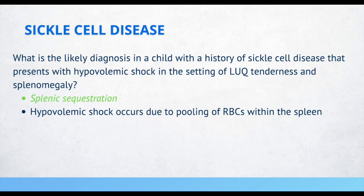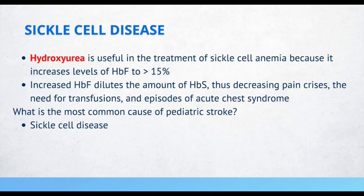What is the likely diagnosis in a child with sickle cell disease that presents with hypovolemic shock in the setting of left upper quadrant tenderness and an enlarged spleen? Splenic sequestration — hypovolemic shock occurs due to pooling of red blood cells within the spleen. Hydroxyurea is useful in sickle cell anemia because it increases levels of HbF to greater than 15%, which dilutes hemoglobin S, thus decreasing pain crises, the need for transfusions, and episodes of acute chest syndrome.